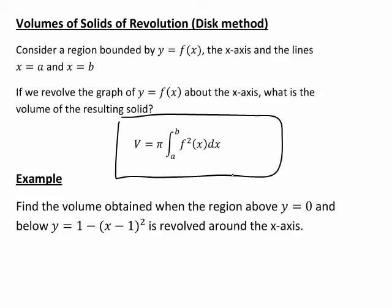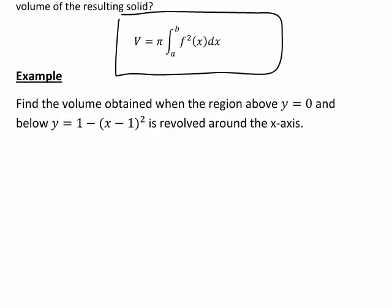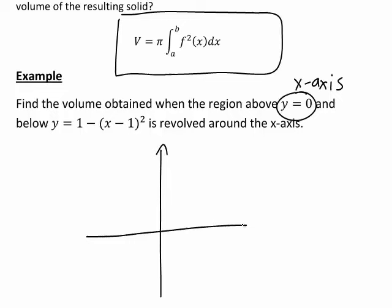Let's have a look at how this works in the context of a specific example. We'll find the volume obtained when the region above y = 0 (that's just the x-axis again) and below y = 1 - (x - 1)² is revolved around the x-axis. When doing a problem like this, I always strongly recommend starting with a sketch of the situation so that we can see what region we're actually considering.